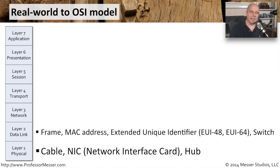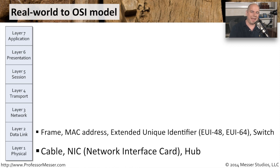The second layer, or data link layer, is where we would start to see actual frames being created and put onto the network. At the most basic level of a frame, we're talking about MAC addresses — at least in the Ethernet world. You may also see the term Extended Unique Identifier, an IEEE trademark term: EUI-48 or EUI-64, referring to the 48-bit and 64-bit format of a physical address. We also know that switches work at this layer — when they see a MAC address, they look up in their table where to send it. All forwarding decisions made by switches happen at layer 2, the data link layer of the OSI model.